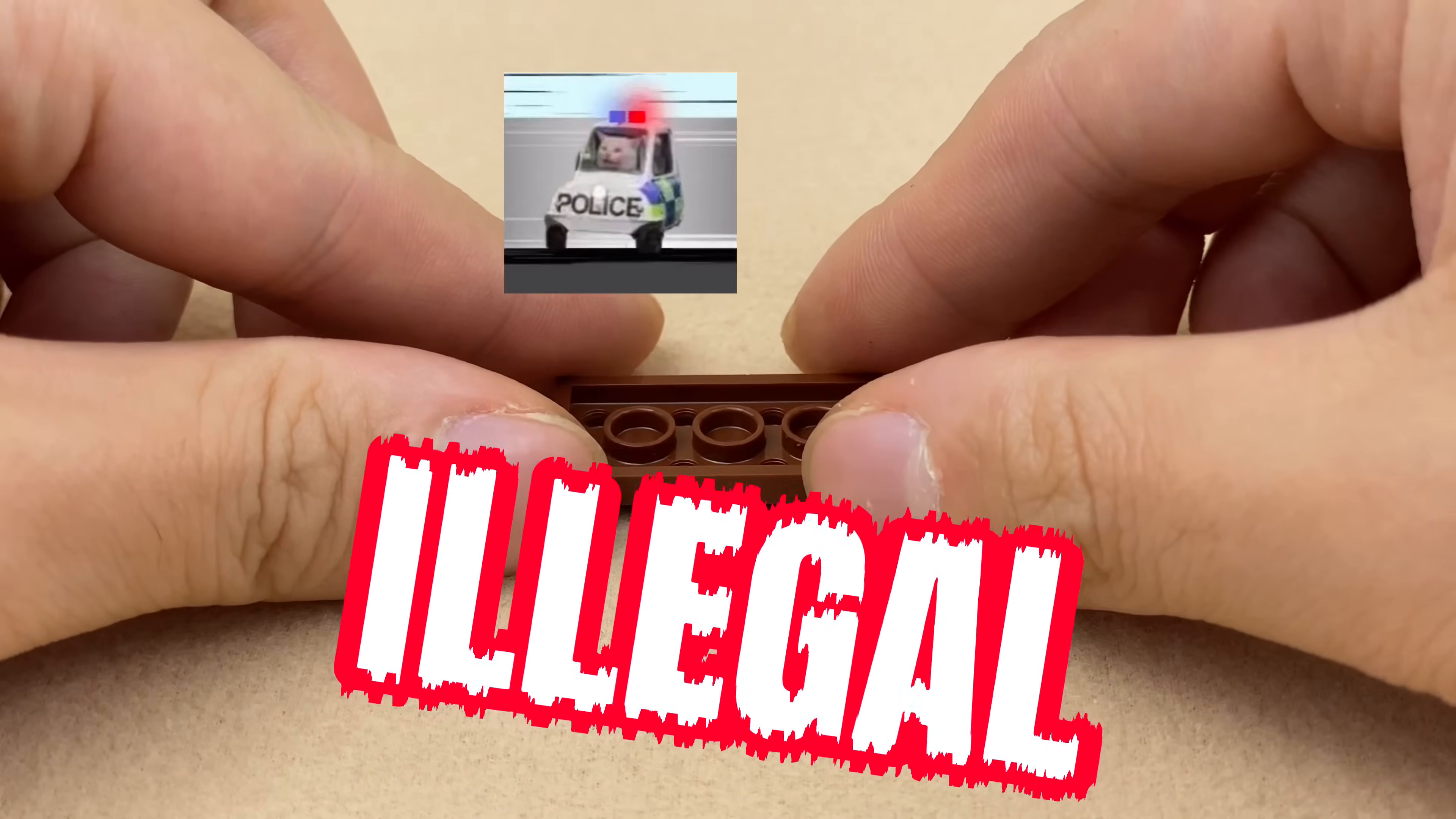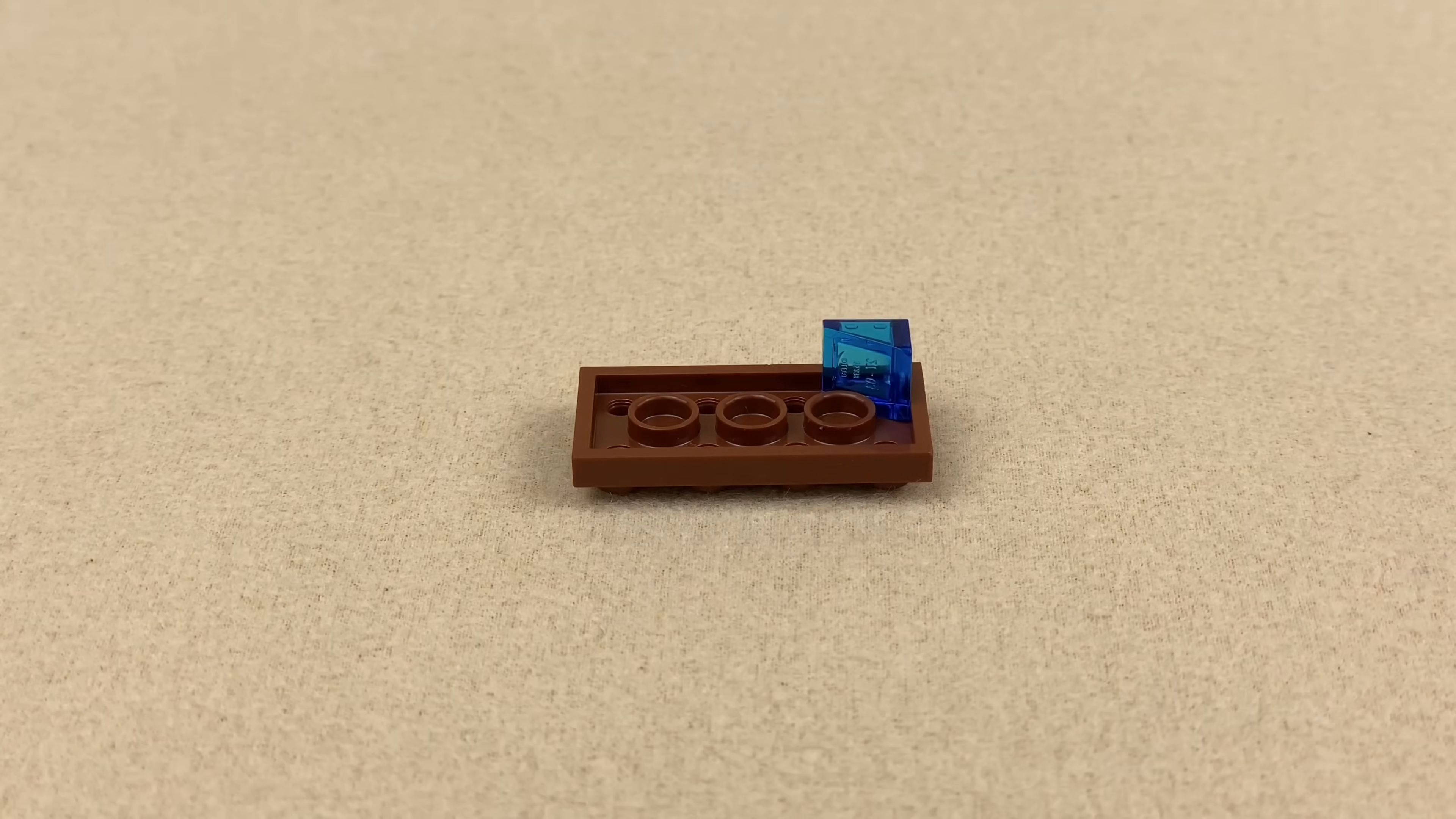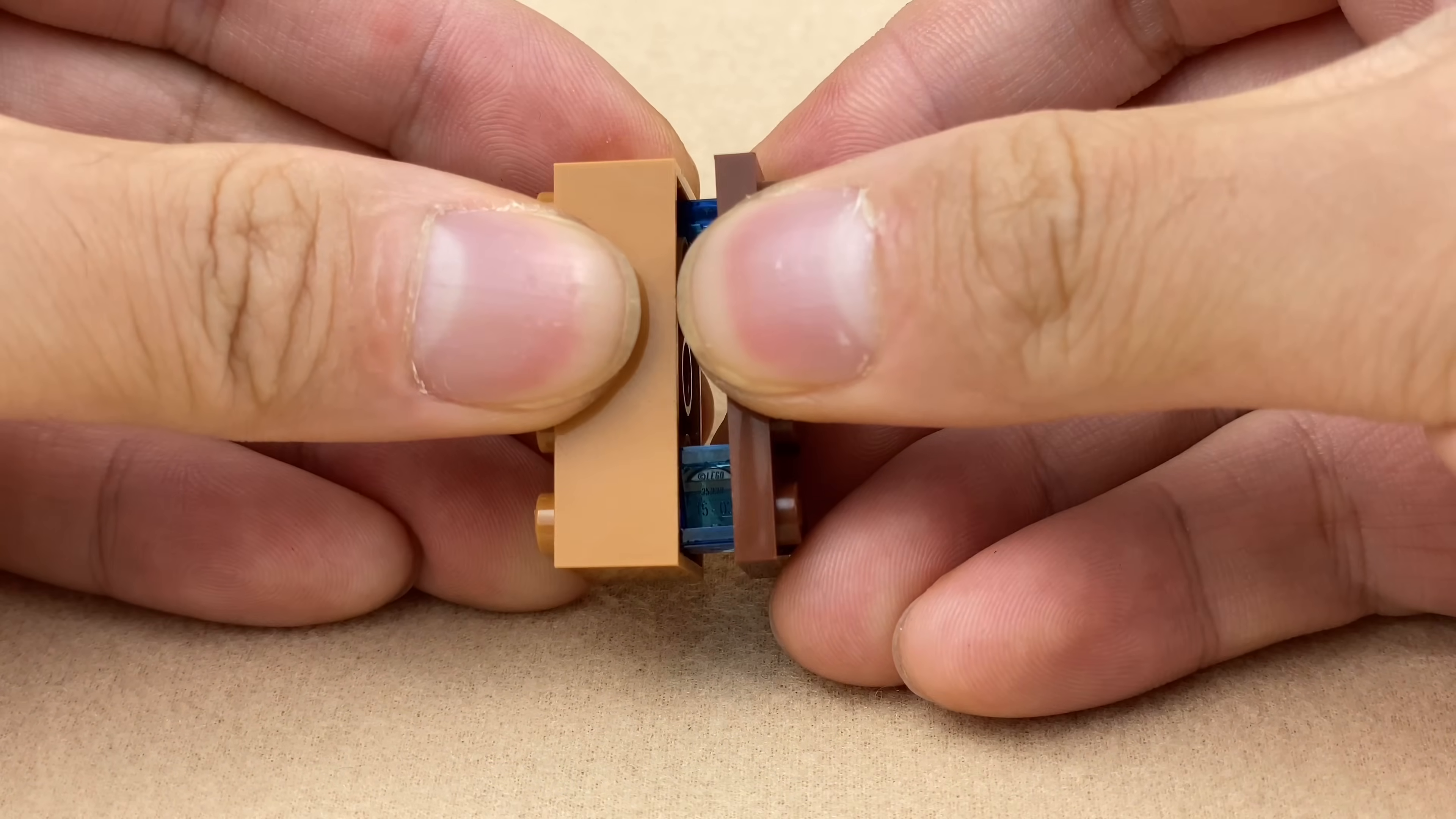Now let's delve into some illegal building techniques. Attach the cheese slope to the bottom of a 2x4 plate and then connect it to a brick. This results in a brick oriented in two directions. Plus, it makes a sound that is oddly satisfying.